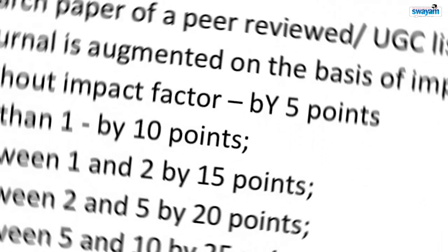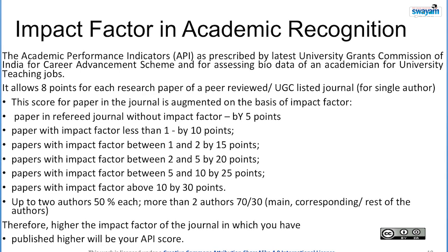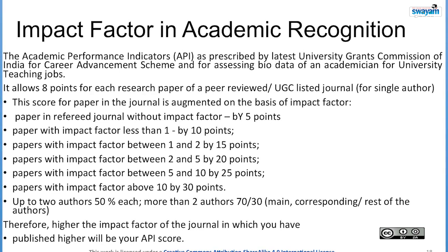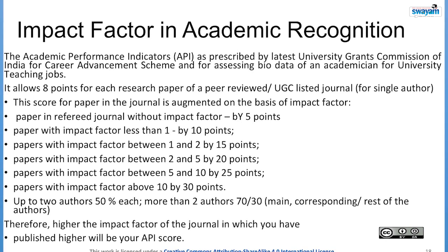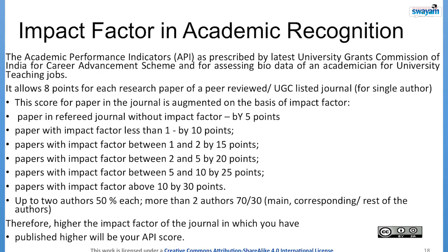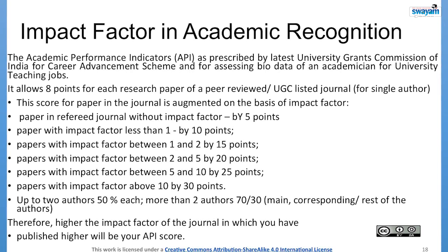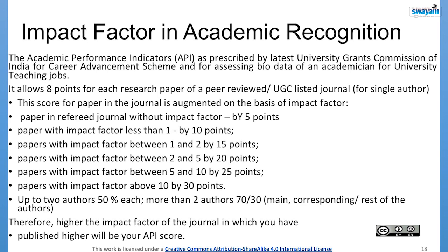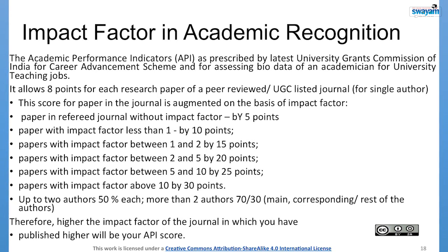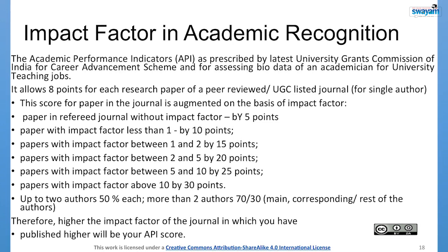Now let us discuss impact factor in academic recognition — I think you might have been waiting for this. UGC has prescribed a set of conditions called API, the scoring parameter based on publications. It provides certain points for approved journal publications. Each article in a UGC-listed journal earns eight points for a single author publication, and this score is augmented based on impact factor.